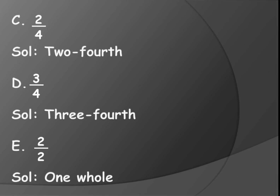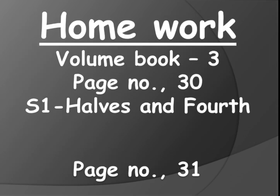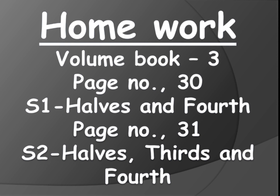So these are the sums you have to write in your classwork. For homework, complete the workbook children - two pages: page number 30, S1 halves and fourths - halves means one by two, fourths means one by four, two by four, three by four. Thirds means one by three, two by three. Page number 31, S2 halves, thirds and fourths. Complete this children - in the next class we will learn the next topic. See you in the next class, bye.